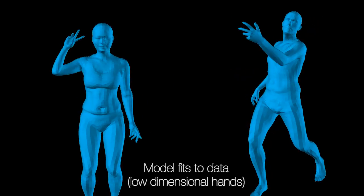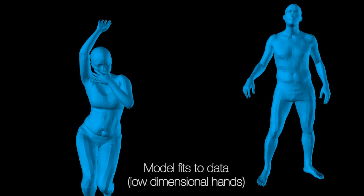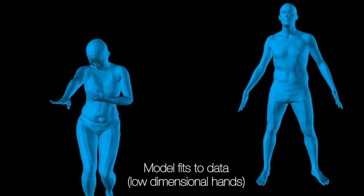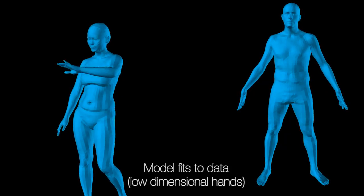With the SMPL+H model, we recover hand and body movements together from 4D scans of people in motion. We fit SMPL+H to the sequence and recover a detailed alignment of the scan data over time.